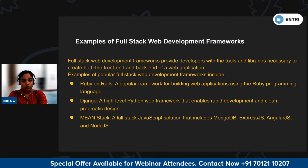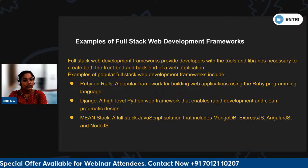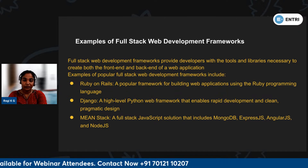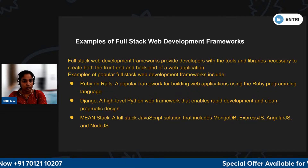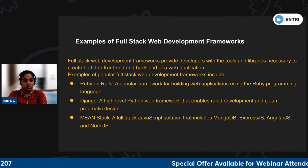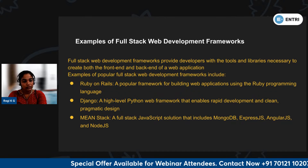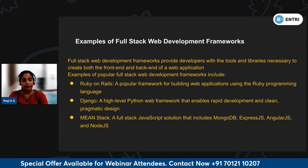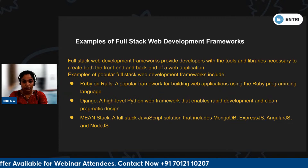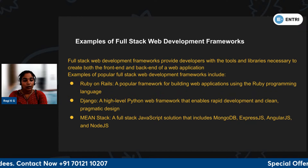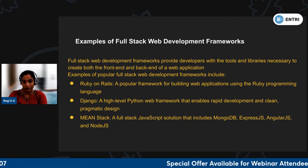There are some examples of full-stack web development frameworks. In all companies, there are frameworks that are used. Examples include Ruby on Rails, Django (a Python framework), and MEAN stack. These are preferred frameworks used in companies.